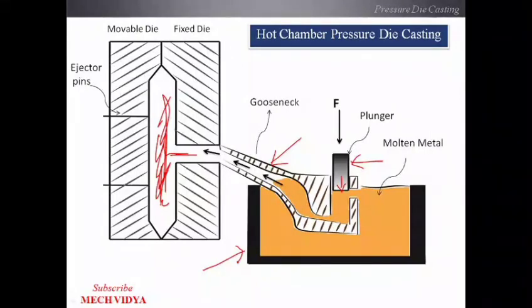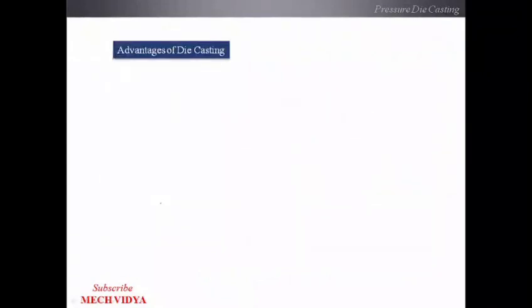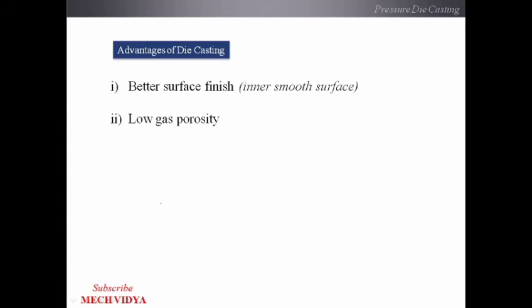Before closing, let us understand the advantages of die casting over traditional sand casting. The first point is better surface finish — since metallic molds are used, surface finish is far better compared to sand molds. Second, low gas porosity — porosity means small air pockets that remain in the molten metal. In die casting, since the molten metal is squeezed inside the die cavity, the chances of porosity become negligible. Third, homogeneous grain structure — uniform grain structure is attained in die casting because uniform pressure is applied.